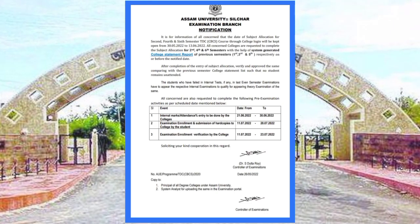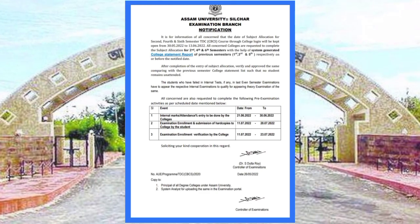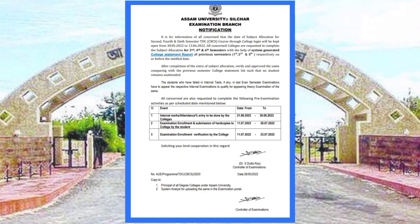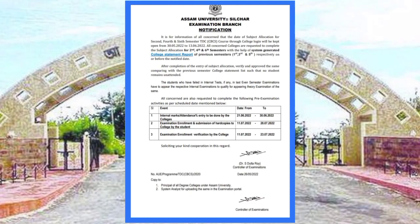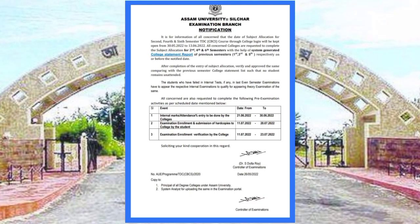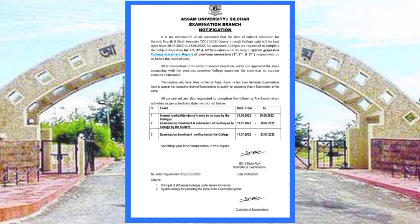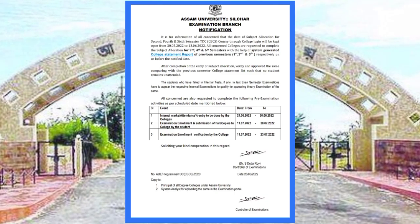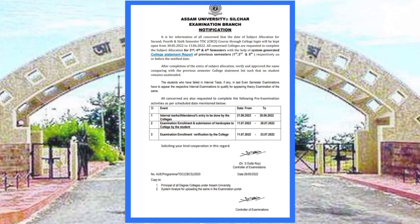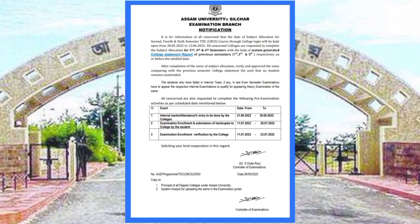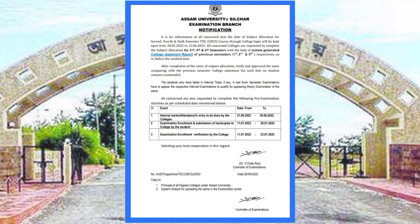All concerned colleges are requested to complete the subject allocation for 2nd, 4th, and 6th semester with the help of the system-generated college statement report of the previous semesters — 1st, 3rd, and 5th respectively — on or before the notified date. All colleges are directed to complete the subject allocations accordingly.